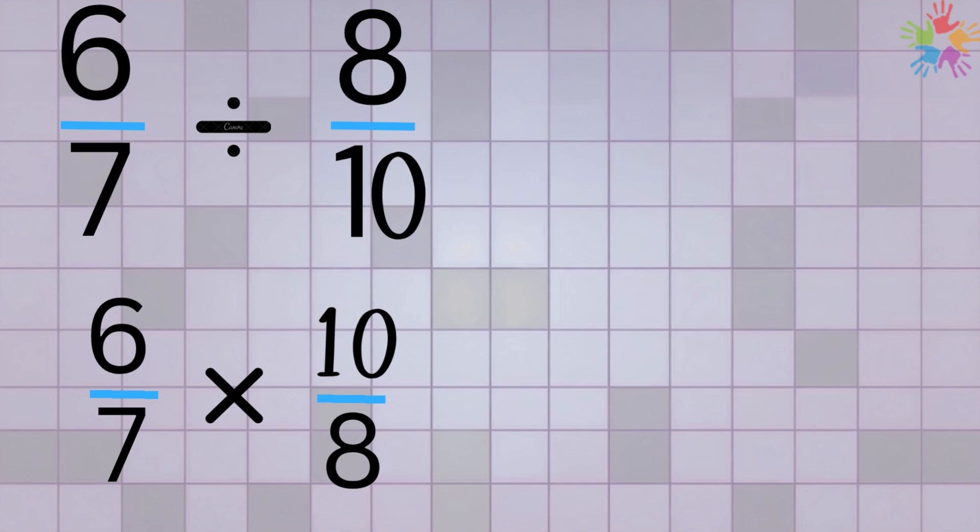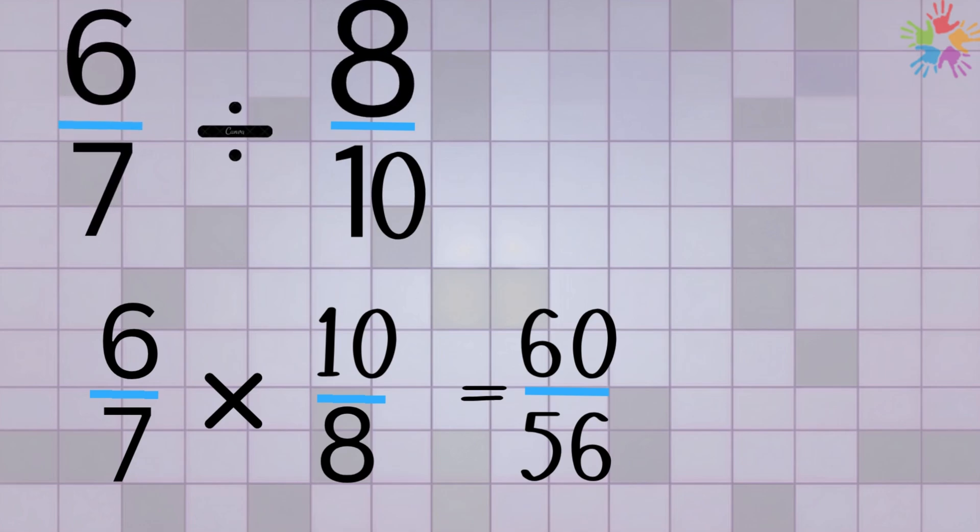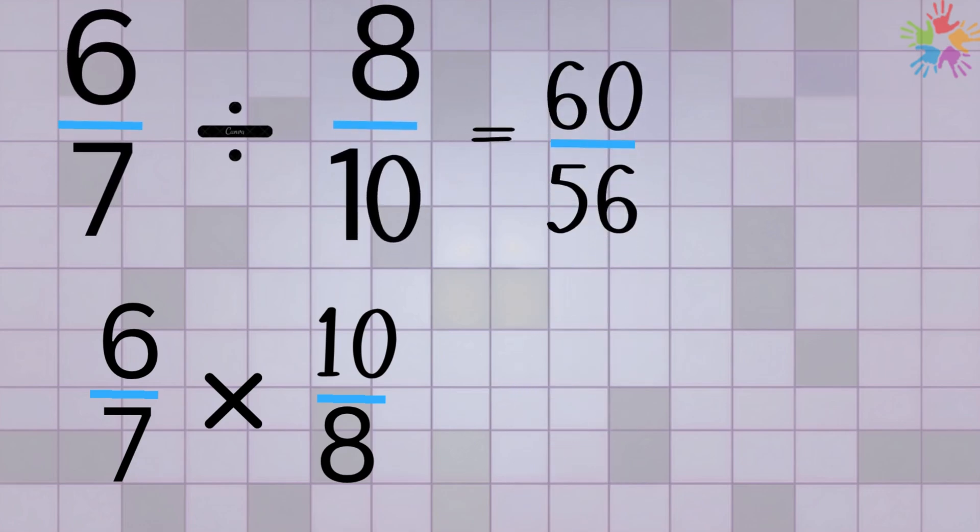Alright, now that we've changed the problem to multiplication, it's simple. Just multiply the numerators: 6 times 10 equals 60, and multiply the denominators: 7 times 8 equals 56. So the answer to 6 over 7 divided by 8 over 10 is 60 over 56.